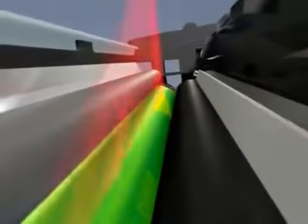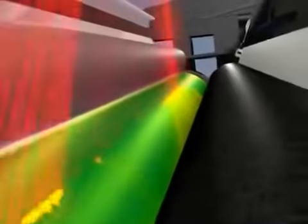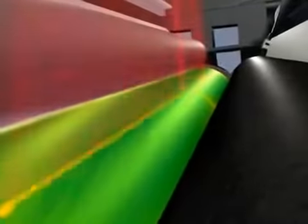The laser strikes the photoconductor drum up to 65 million times a second, creating a chemical reaction that discharges the areas that are negatively charged, resulting in an electrostatic image.